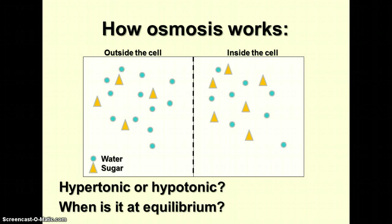Here we have a cell in a solution. On the left is the solution outside the cell, and on the right is the inside of the cell. Inside the cell there are six sugar molecules and about eight water molecules; outside there are four sugar molecules and twelve water molecules. Since there is relatively more sugar inside the cell compared to outside, the outside is a hypotonic solution, so water will move into the cell. It will reach equilibrium when the ratio of water molecules to sugar molecules is the same on both sides. The sugar molecules can't pass through the membrane — they're too large.